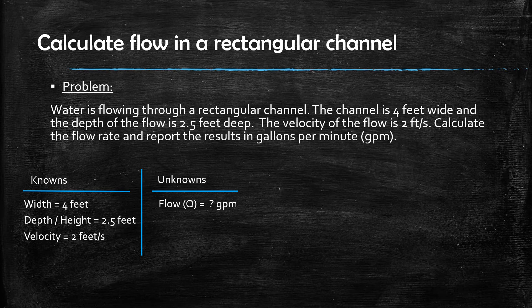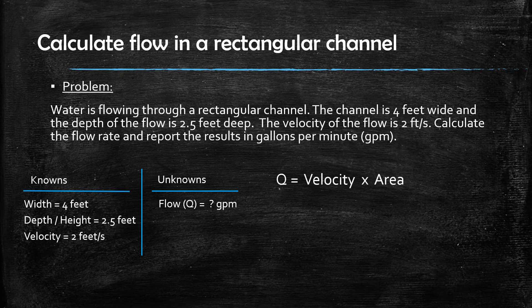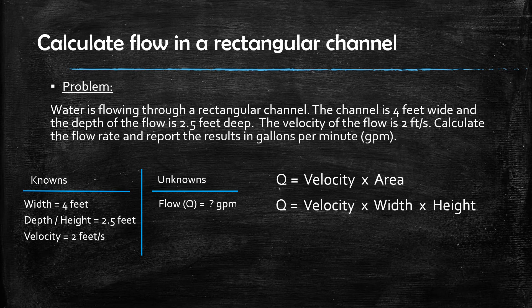We are now ready to calculate the answer. The flow rate is equal to the velocity multiplied by the cross sectional area. The area of a rectangle is given by the width multiplied by the height. The resulting calculation is the velocity multiplied by the width of the channel multiplied by the depth of the flow.